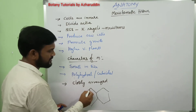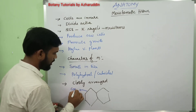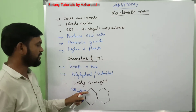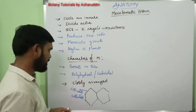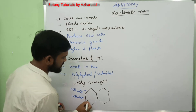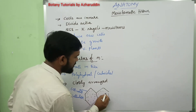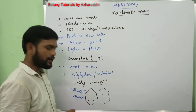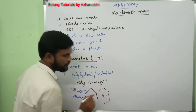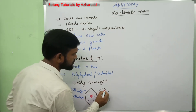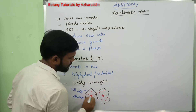They have thin cell walls. Inside the cell wall there is dense cytoplasm. In the center of the cell, a big conspicuous nucleus is present. A number of small vacuoles are also present in the cytoplasm.